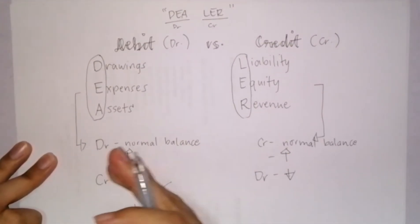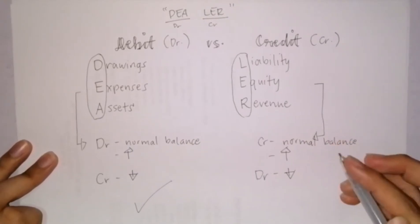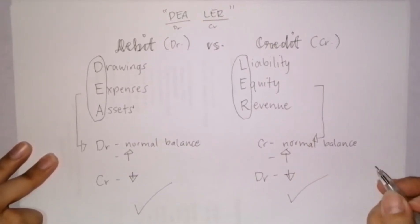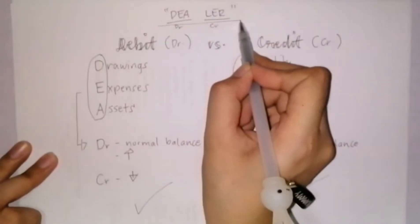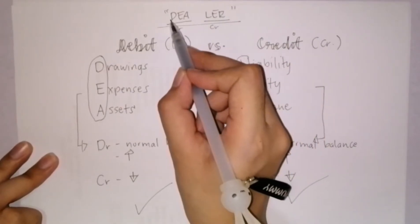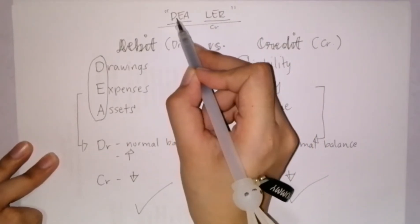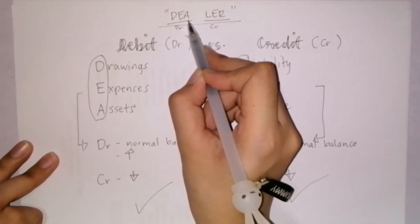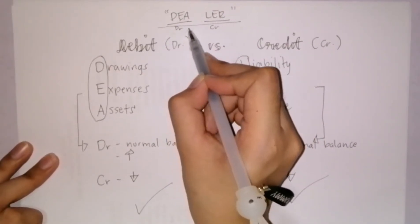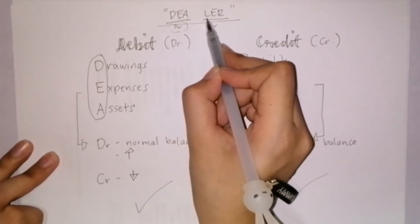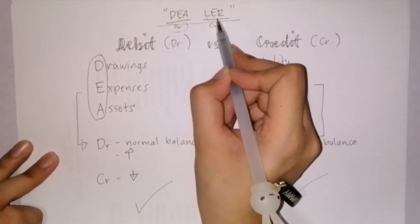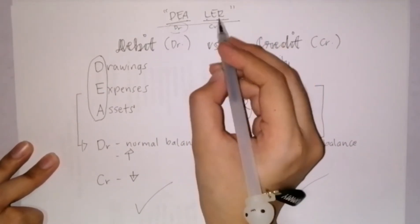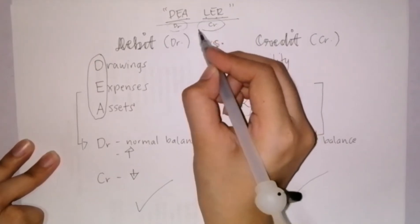We are done with debit and credit. Always remember the acronym DEALER: drawings, expenses, and assets under the debits; liabilities, equity, and revenue under the credit.